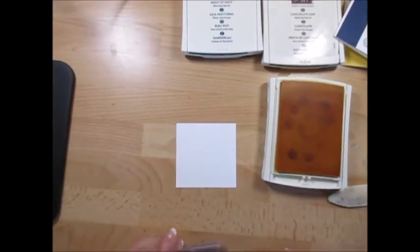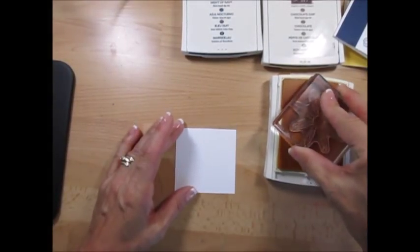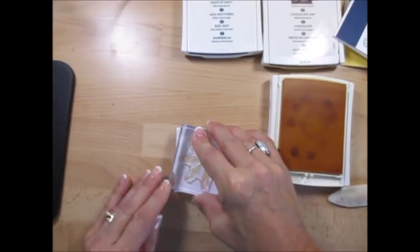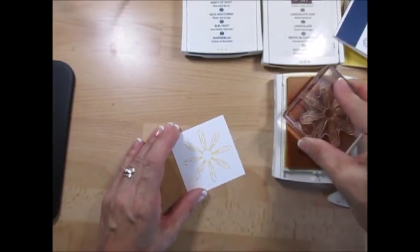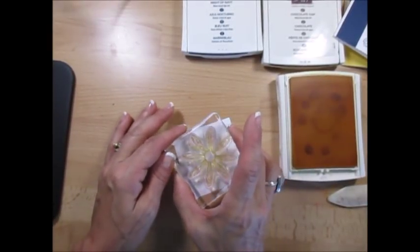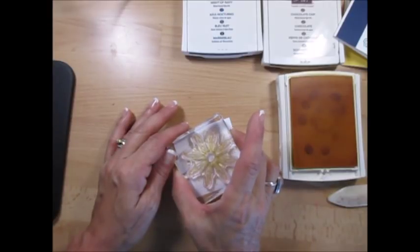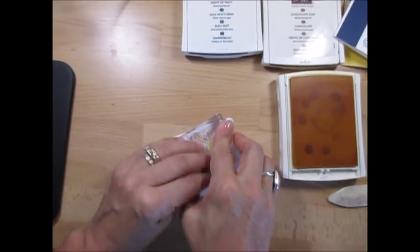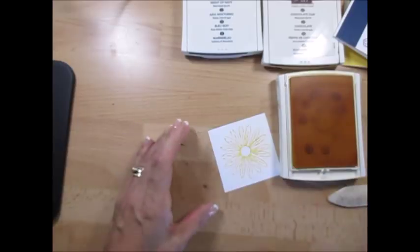I'm going to use Daffodil Delight. We're going to stamp this once, lift it up, go get more ink to make it look like a sunflower. You want to ink it twice and stamp again. Et voila.